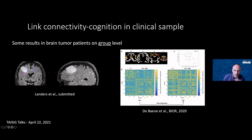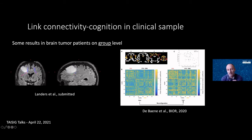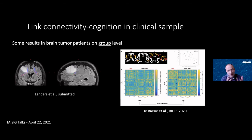We also showed that functional connectivity is related to executive functioning in brain tumor patients. Patients who show larger changes in specific networks — in this case the frontal parietal network — from rest to task performance, perform better on executive functioning. These studies all relied on group-level analysis.